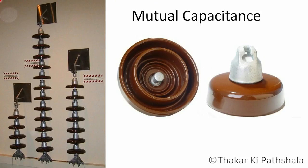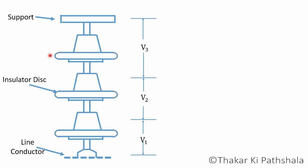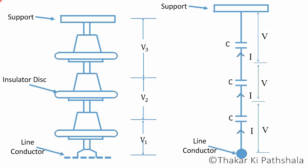This is called mutual capacitance C. As all the units are the same in shape, size, and material, the value of their capacitive reactance will be equal. So if we draw a line diagram of this system, it will look like this. Equal charging current will flow through all the discs and we can imagine that there will be equal voltage distribution.